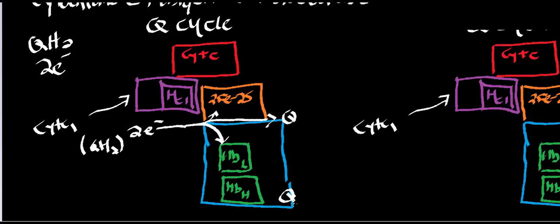Let's look at the bottom electron first. It goes to heme B low potential, then to heme B high potential, and then onto ubiquinone. Normally, ubiquinone with two electrons becomes ubiquinol, but with only one electron it generates a semiquinone radical. That semiquinone radical can accept one more electron in the second Q cycle.